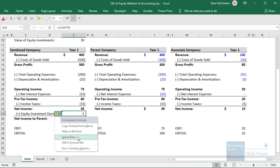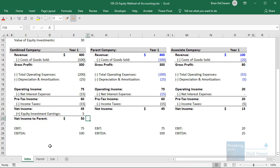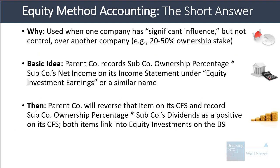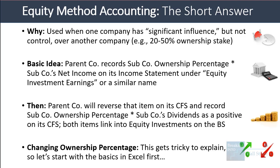With that step done, the parent company will reverse that equity investment earnings item on its cash flow statement and record the ownership percentage times subco's dividends as a positive number on its cash flow statement. Both numbers will link into equity investments on the balance sheet. As far as changing the ownership percentage, it gets tricky to explain, so let's start with a simpler example of just what happens on the three financial statements when a company acquires a 30% stake in another company.